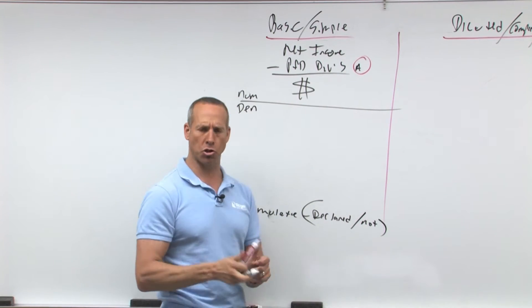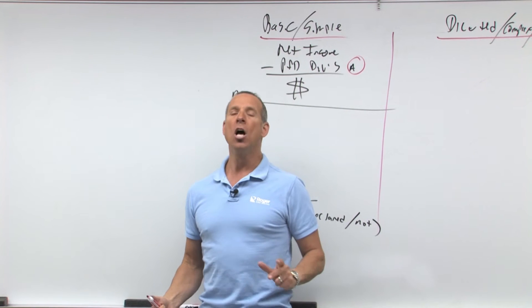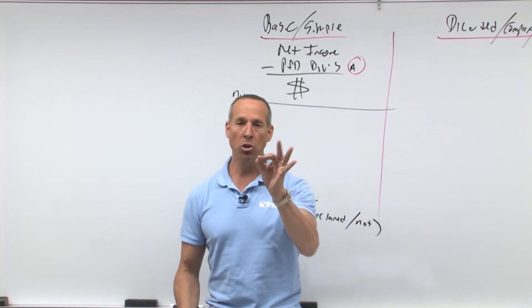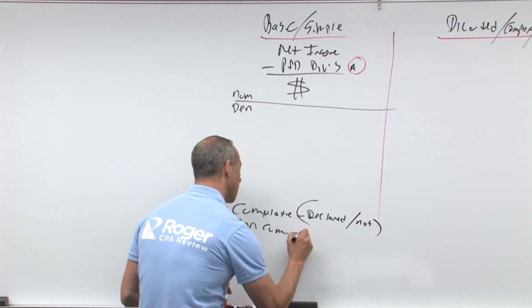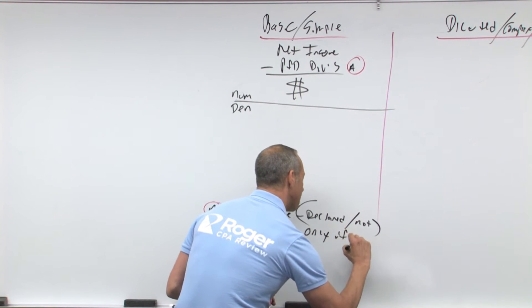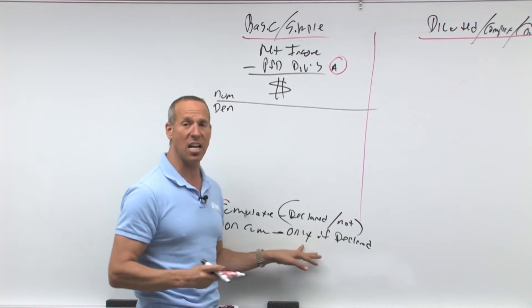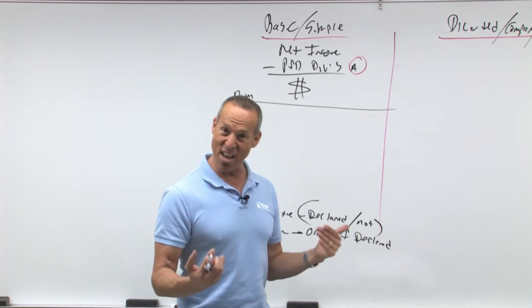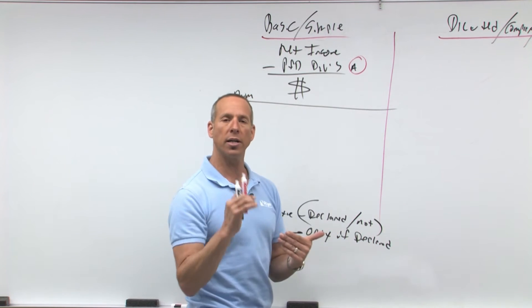So, even if it's not declared, you still take it out. If it's non-cumulative, only if declared. Why is that? Because if it's non-cumulative, if you don't declare it, it's lost forever, you're never going to owe it. If it's cumulative but you don't declare it, you're going to eventually owe it. So we're going to take it out.